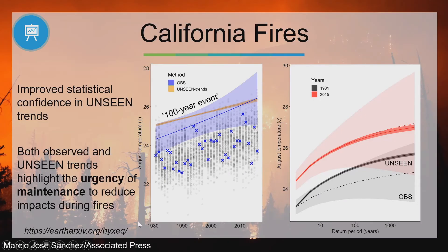This method shows the increase in magnitude of extreme events, and the increase in frequency can also be illustrated. The observed shows a very large range of uncertainties, while UNSEEN narrows this considerably. For example, the event expected to occur once in 100 years in 1981 is now much more frequent: by 2015, you might expect it to occur once in 10 years, and even more frequently by now. Both the observed and UNSEEN trends show an increase in temperature extremes over California, highlighting the urgency of measures to reduce impacts during fires.